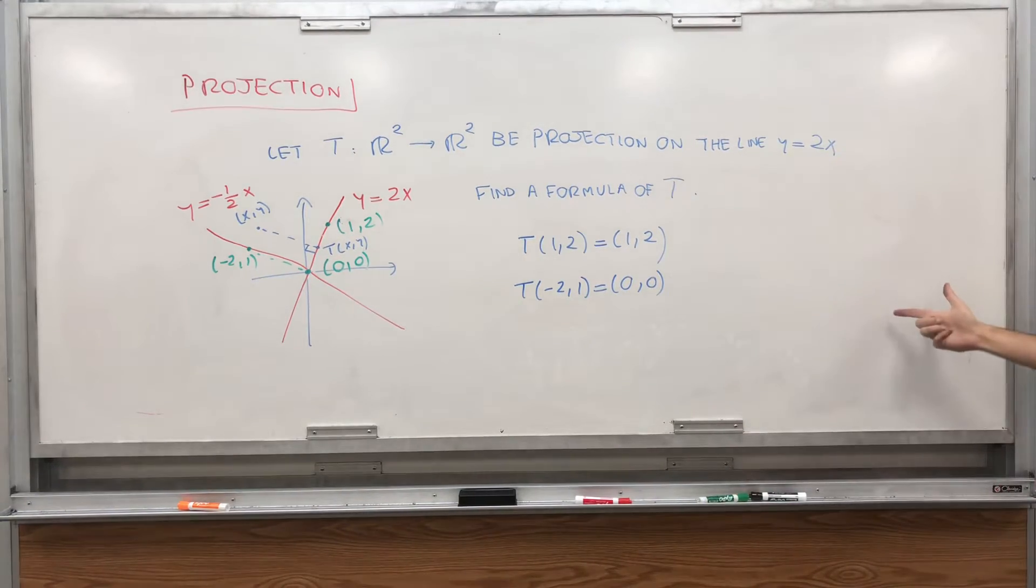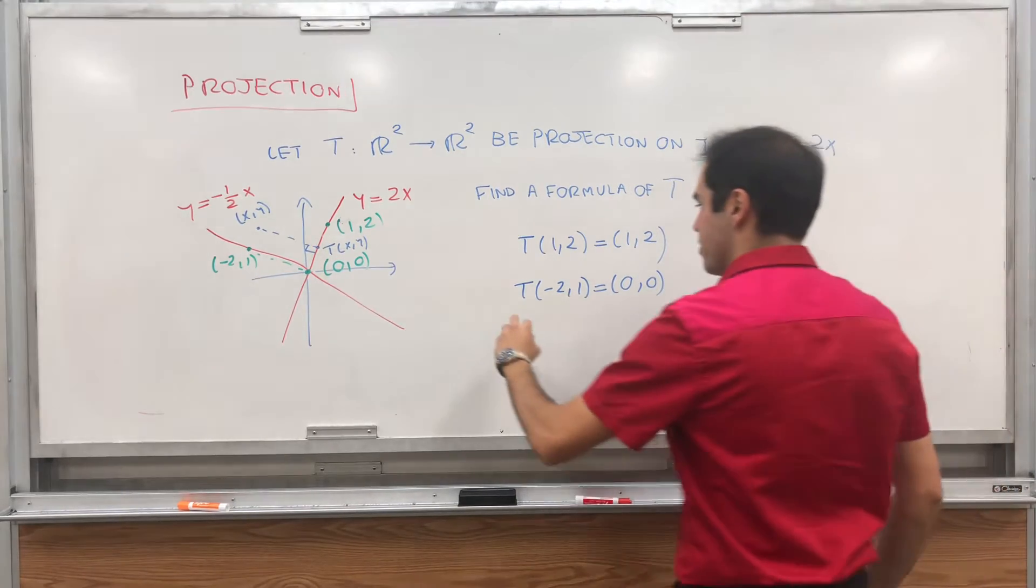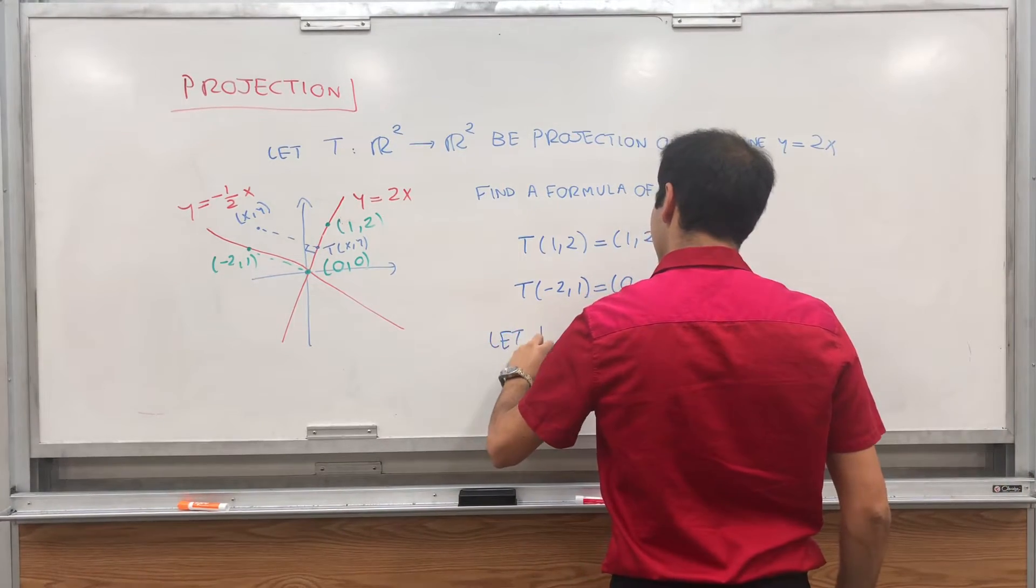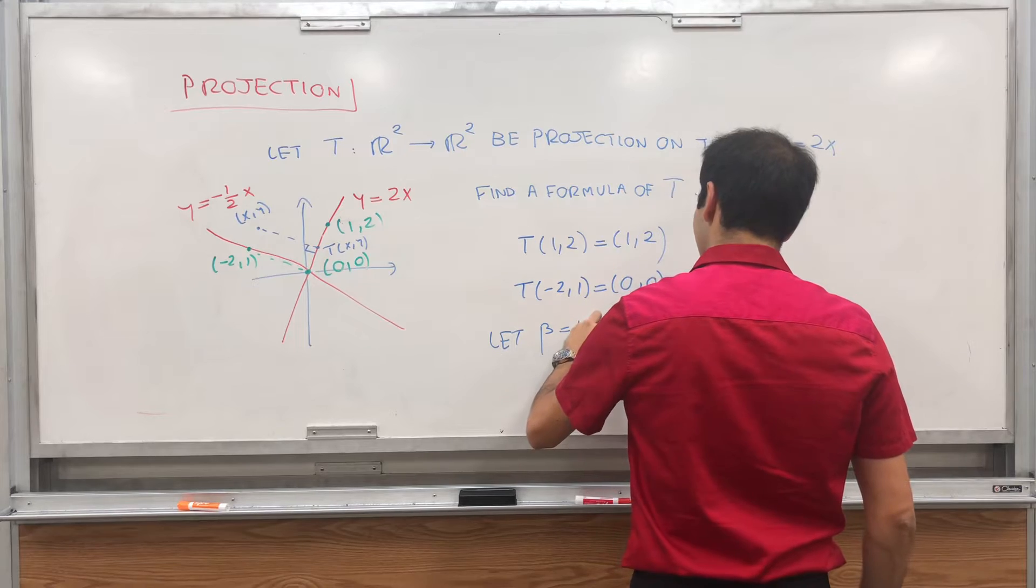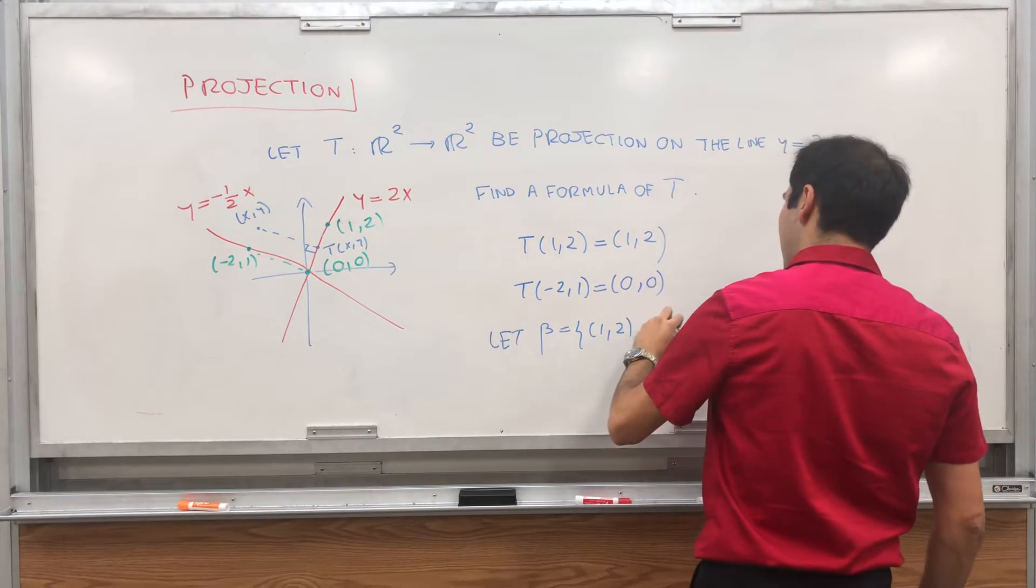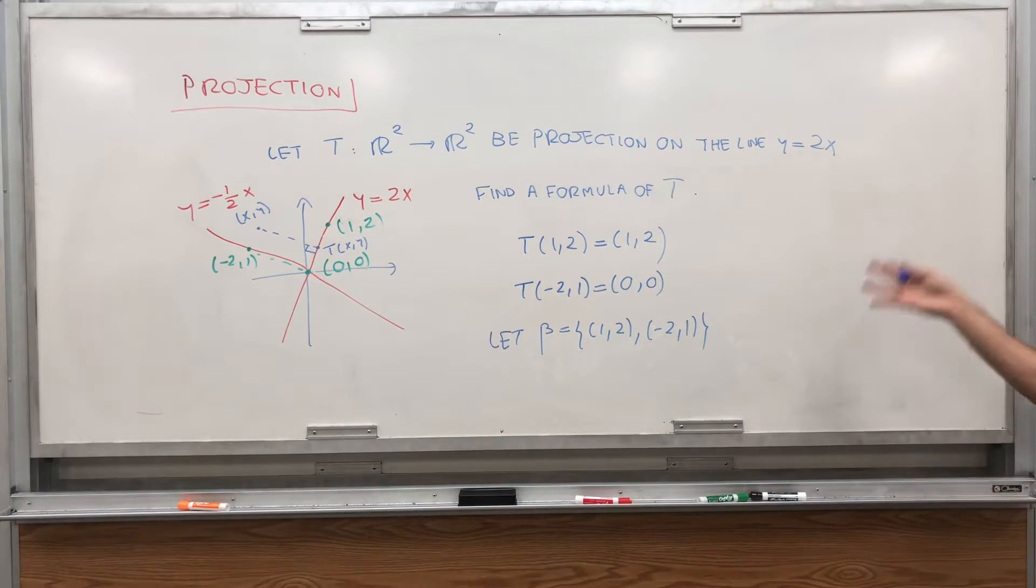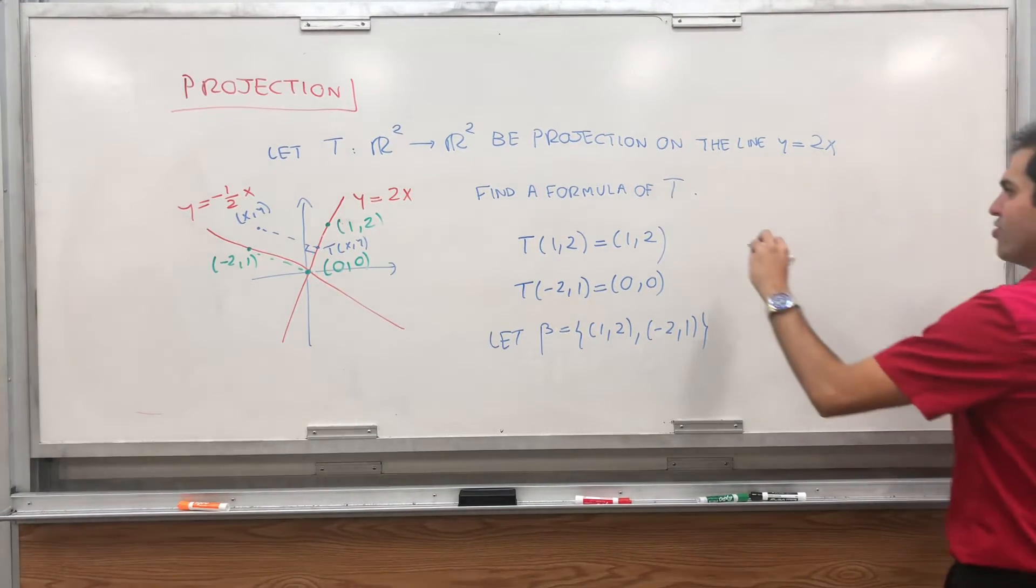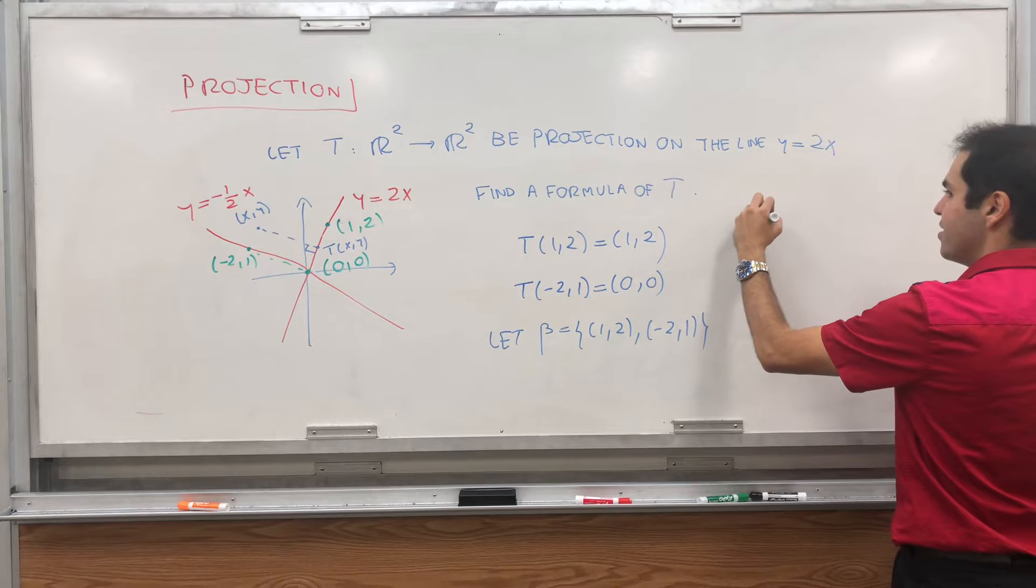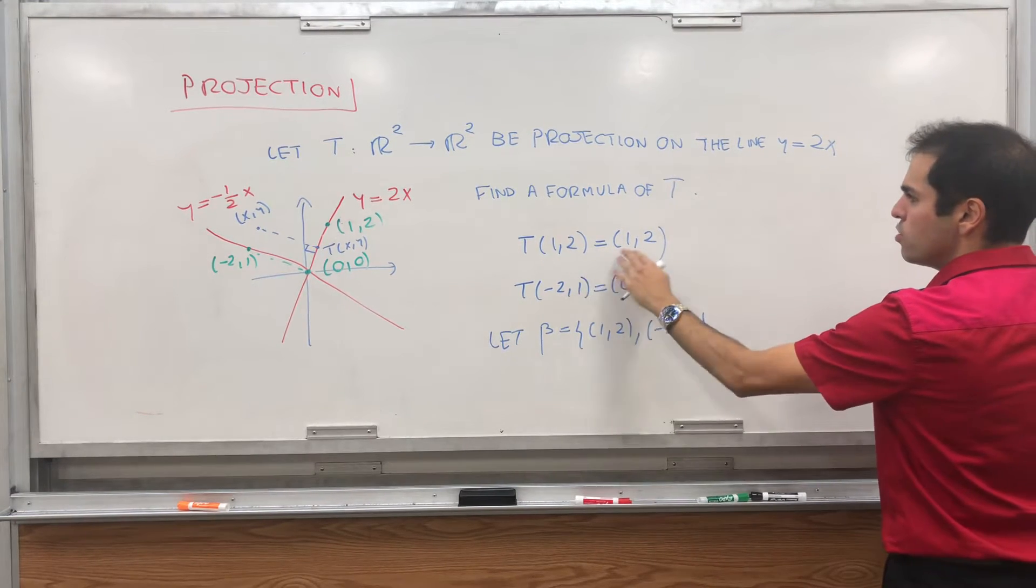And therefore, this suggests to use the same basis as before, so let beta be 1, 2, and minus 2 comma 1. Then, we can find the matrix of T. So T of 1, 2 is 1, 2,